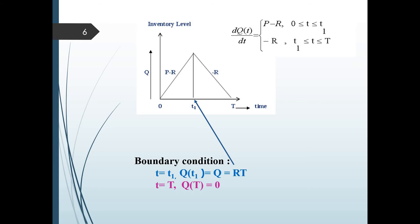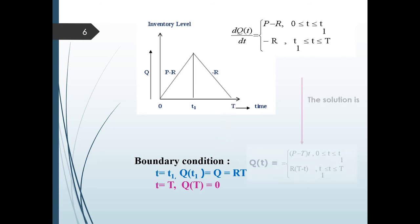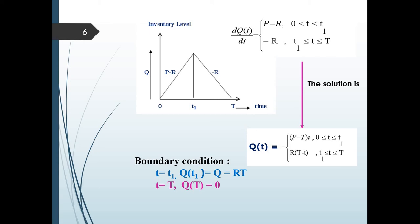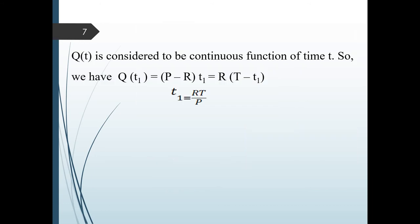At T equal to T1, maximum inventory is accumulated and that equals Q, which is also equal to R times T. At T equal to T, we have no inventory in the system, so Q(T) equals 0. With these boundary conditions, the solution of the differential equation is Q(T) equals (P minus R) times T between 0 and T1, and R times (T minus t) between T1 and T. Since Q(T) is a continuous function, Q(T1) equals (P minus R) times T1 equals R times (T minus T1). Simplification gives T1 equals RT/P, and since RT equals Q, T1 equals Q/P.